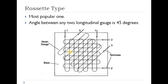The second type is rosette type — it is the most popular one. It measures strain in multiple directions. The angle between any two individual gauges is 45 degrees. So one gauge measures in one direction, the second at 45 degrees, and the third at another 45-degree increment.